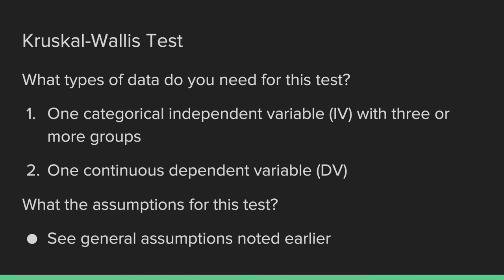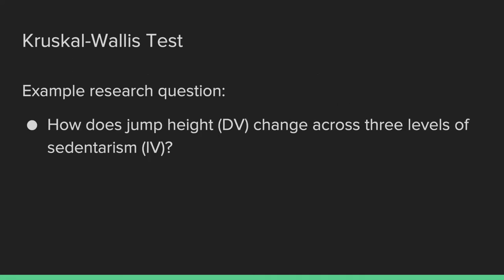Just like a regular ANOVA, you need one categorical independent variable where participants can be grouped, and one continuous dependent variable measured on a scale. There are no additional assumptions beyond those noted earlier. Our example question is: how does jump height change across three levels of sedentarism? Very simple — let's explore.